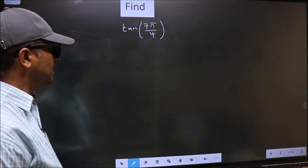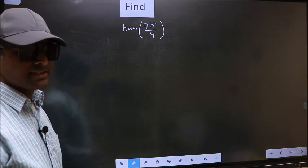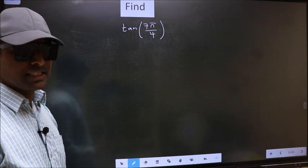Find tan 7π/4. To find this we should follow this method.